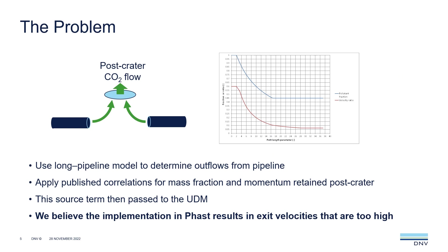So what's the problem that causes FAST not to give us a good representation of the experiment? In the buried pipeline model, we have a full bore fracture of a certain length which exposes the two open ends of the pipe. Flow comes out of each of those ends, they interact with each other, they interact with the crater, and ultimately we have a flow out of the crater. That's quite a complex interaction, so we essentially model this as a large pseudo source.